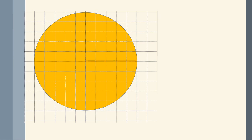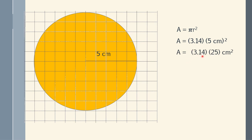A circle. Here it's harder to count squares, so let's use the formula. Given is a 5 cm radius. The formula is pi r squared. Substituting, we have pi equals 3.14 and the radius is 5 cm. So that is 3.14 times 5 squared, which equals 3.14 times 25. Finally, we have 78.5 cm squared as the answer.